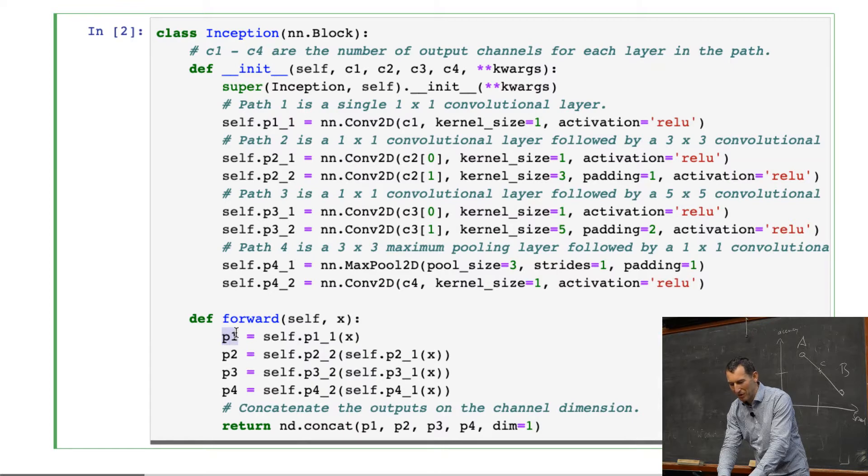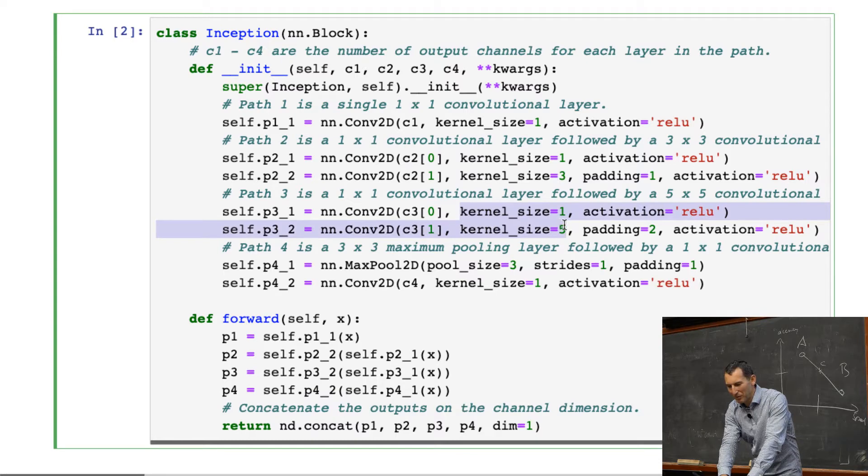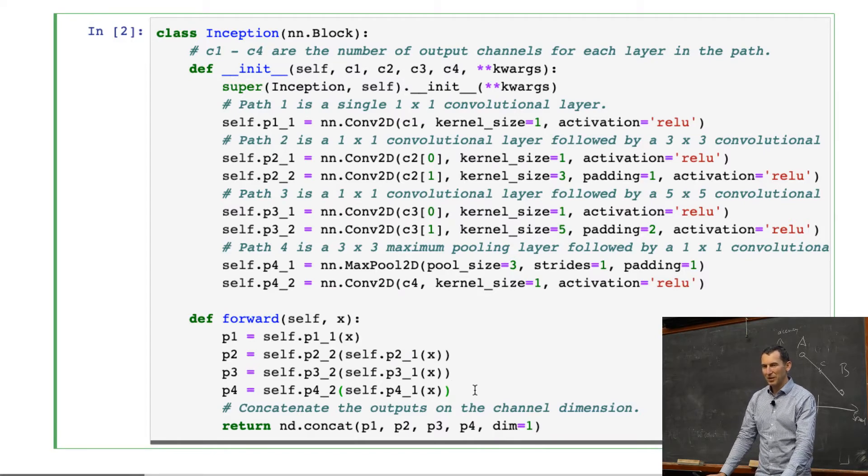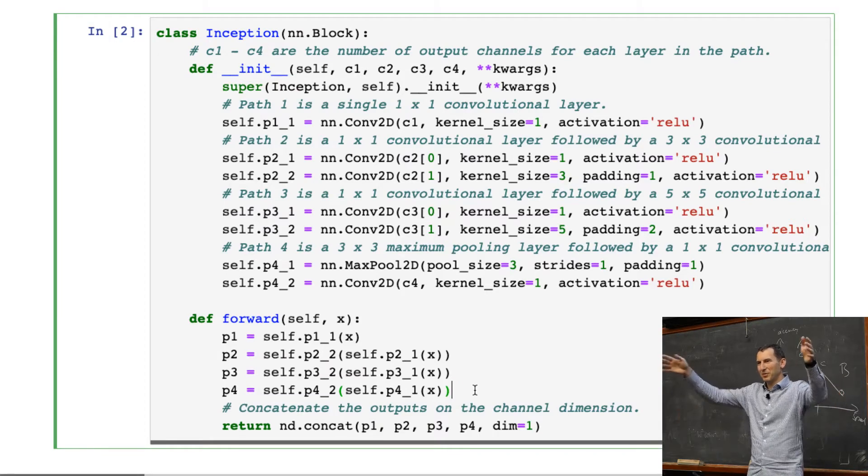Now, I have some parameters, namely c1, 2, 3, and 4. And these are the parameters that govern the sizes, basically the number of channels for the various paths. These are the four paths. Path 1, 2, 3, and 4. Now, what I then do is I code up p1 is p11 of x. That's path 1 of the input. p2 is p2 of 2 of p21 of x. Because I'm actually concatenating those two pieces, I first apply a 1 by 1 and then a 3 by 3. For path 3 I do the same thing for 1 by 1 and 5 by 5. For path 4, I have that for max pooling and convolution. Now I have those four paths separately. And now I can concatenate it.